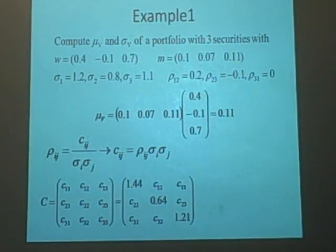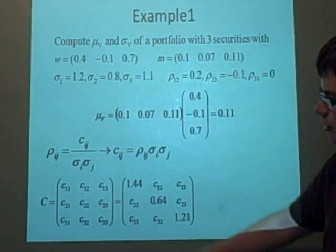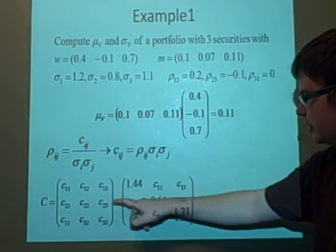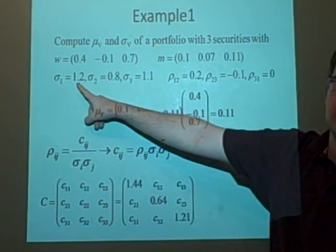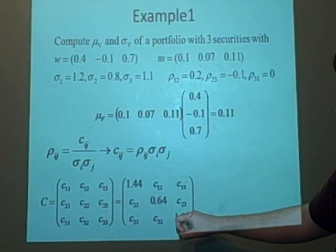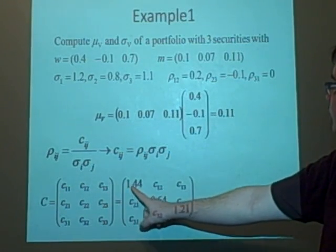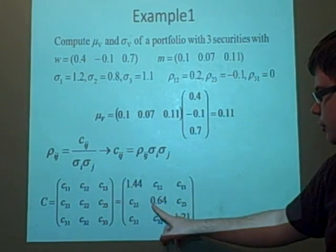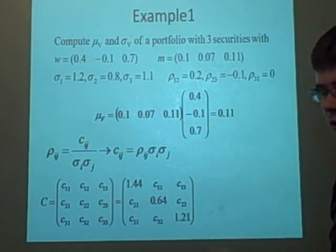And like I said before, it was a little fact we knew that if i and j are equal, then it's just the standard deviation squared. So, 1.44, 0.64, and 1.21.